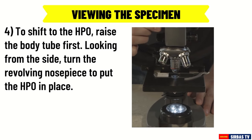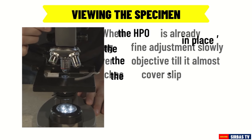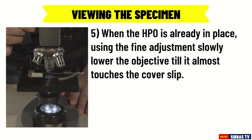To shift to the high power objective, raise the body tube first. Looking from the side, turn the revolving nosepiece to put the high power objective in place. You must watch from the side when changing objectives because objectives are of different lengths — this prevents accidental crashing of the objectives into the slide and breakage of an objective lens, slide, or coverslip. When the high power objective is in place, use the fine adjustment to slowly lower the objective until it almost touches the coverslip. Then, looking through the eyepiece, turn the fine adjustment until you see the clearest image. The fine adjustment knob should only be used with the high power objective because the high power objective is longer and can easily crash into the coverslip and slide.